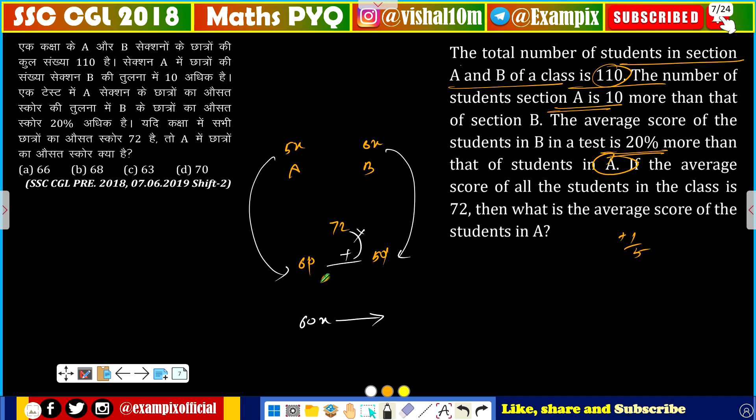And multiply them 6, 5, 11 into 72. Now we get 5x value, so 5x value we get 12 here.